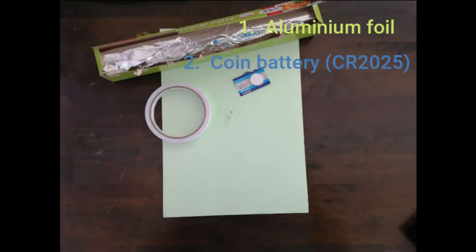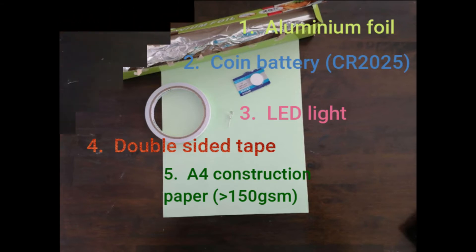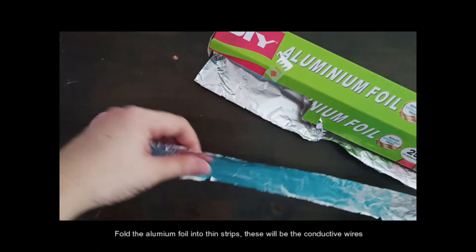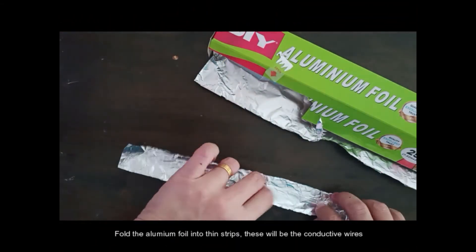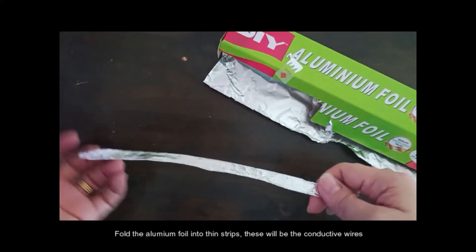For this project, we will use aluminum foil, coin battery, LED light, double-sided tape and A4 construction paper. First, let us fold the aluminum foil into strips. This will serve as the conducting wires.